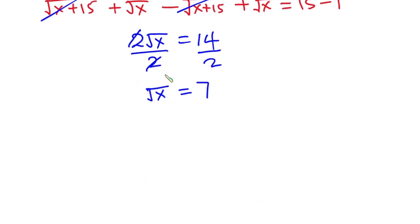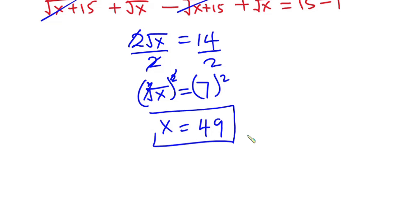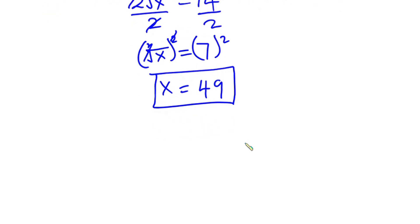We want to find x, so let's square each side of the equation. The square cancels the square root, giving x equals 7 squared, which is 49. Now let's go to the second approach, which is very short.